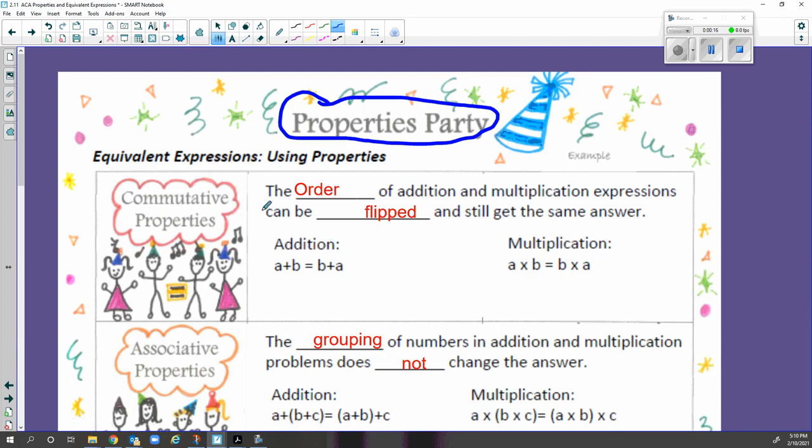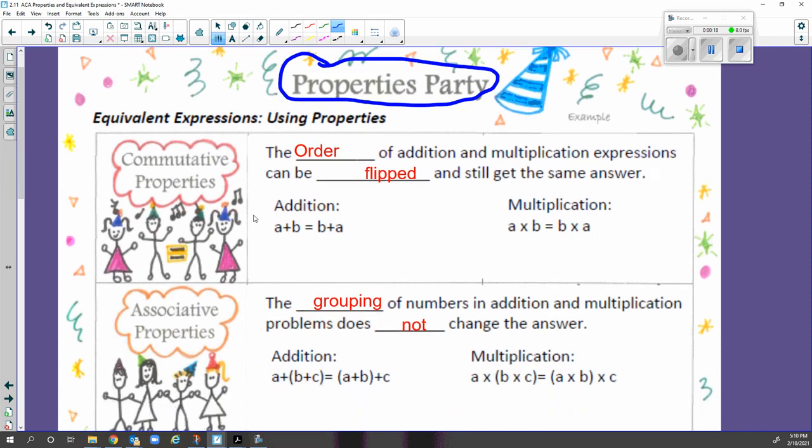The first property I want to talk to you about is the commutative property. And what the commutative property does is it talks about the order of addition and multiplication expressions can be flipped or rearranged to still get the same answer. So, we've modeled that by saying a plus b is the same as b plus a. If we fill that in with real numbers, that would be like saying 3 plus 5 is the same as 5 plus 3. Either way, we're still going to get 8. It doesn't matter what the order is.